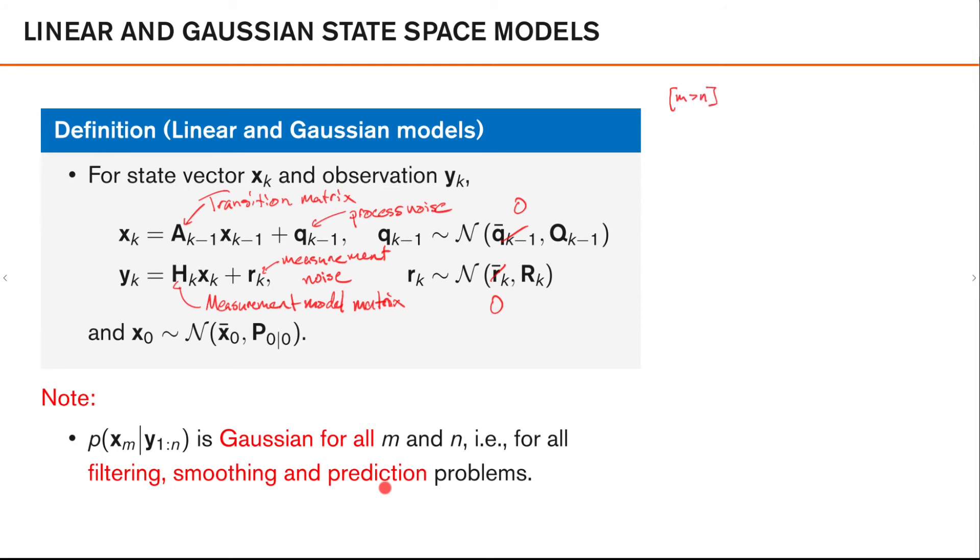then the joint density of p of x from 1 to m and our observations y_1 to y_n is jointly Gaussian.